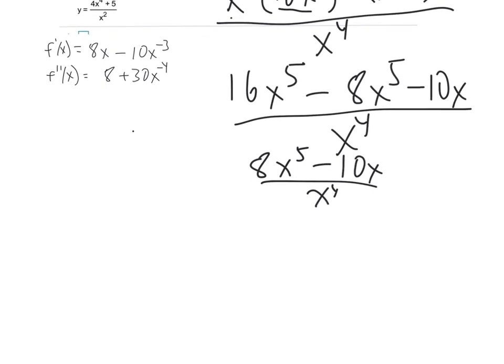So that is 8x^5/x^4 minus 10x/x^4. I can cancel that out - that becomes 8x, and I cancel out the x, so 10/x^3.